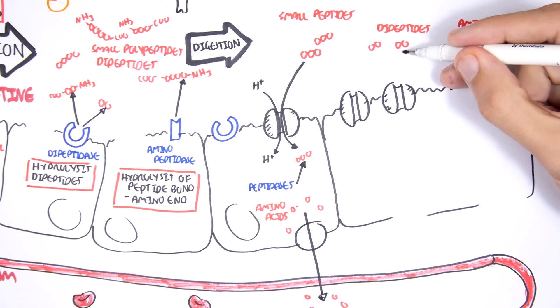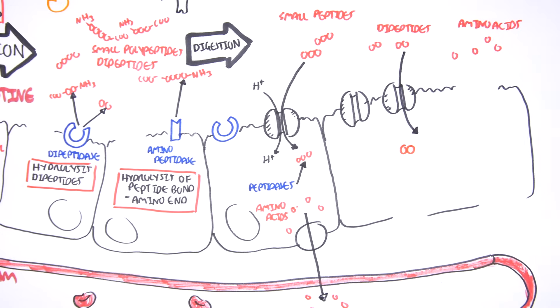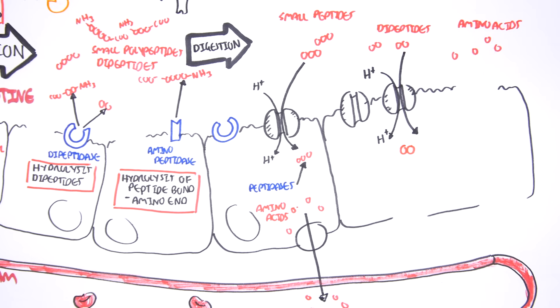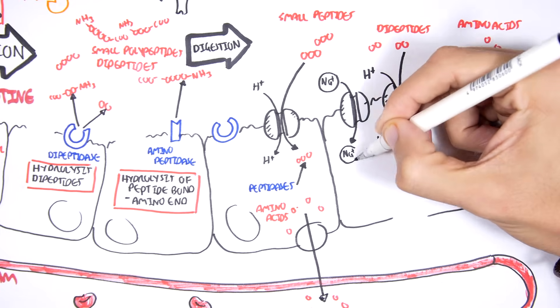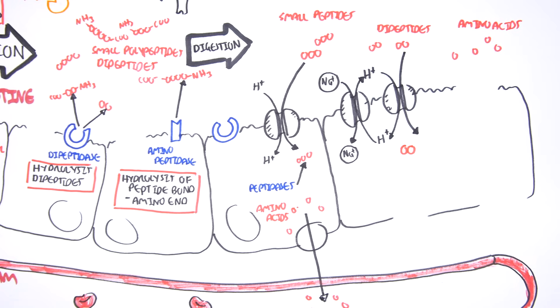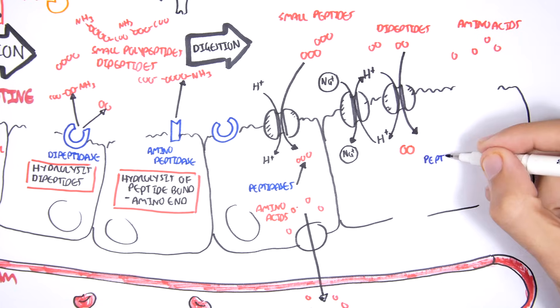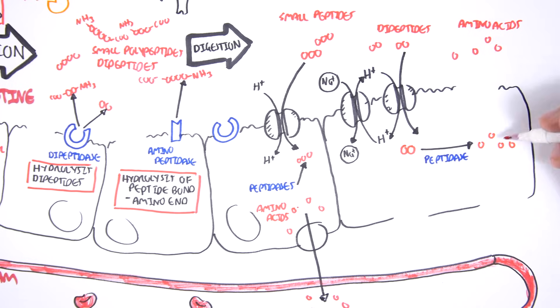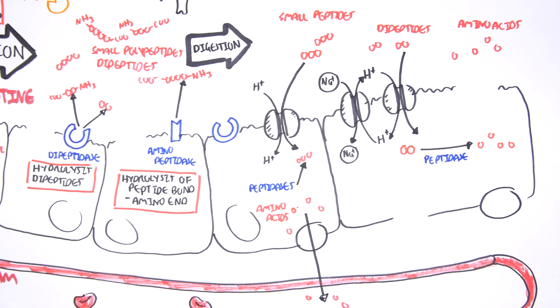The dipeptides can also follow the same absorption method. It enters the cell through the hydrogen cotransporter channel. The hydrogen can actually be pumped back out into the lumen in exchange for sodium. The dipeptide, which is inside the cell now, can also be broken down into amino acids by intracellular peptidases. The amino acid can then be reabsorbed into the blood.